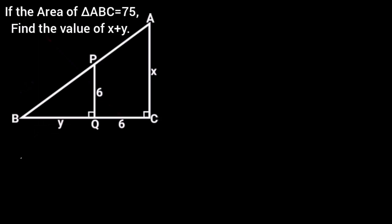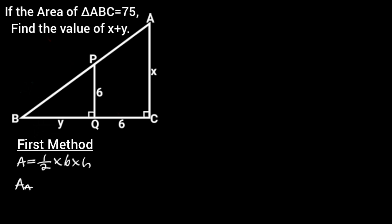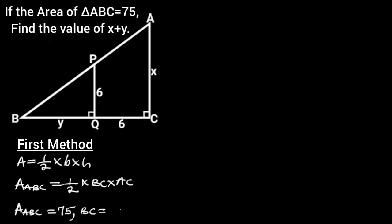Let's go ahead and solve. First method. To solve this problem, let's recall that the area of a triangle is 1 over 2 times base times height. It follows that the area of triangle ABC is equal to 1 over 2 times BC times AC. From the question, the area of triangle ABC is given as 75 square units. BC is equal to Y plus 6.